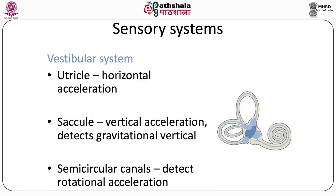Within the otolith organs are hair cells and endolymph. When acceleration occurs, the endolymph is displaced and the hair cells bend. When the hair cells are displaced they are depolarized, leading to the generation of an action potential. This transduction process at hair cells is a detailed topic in itself.